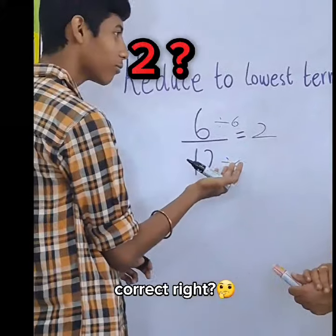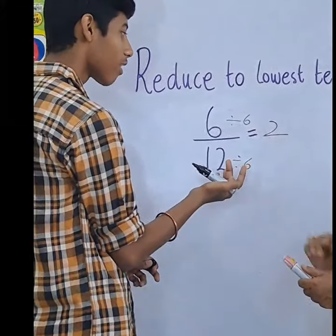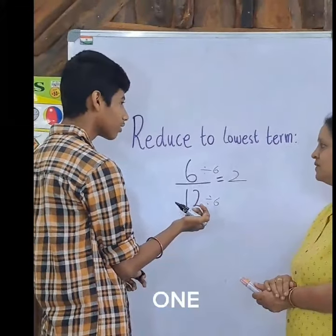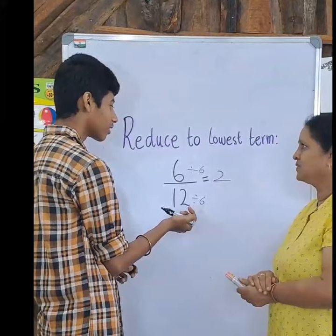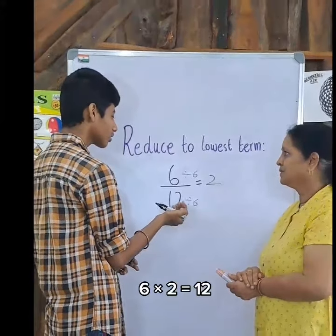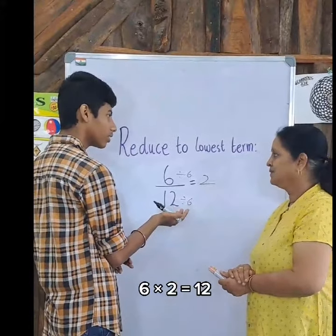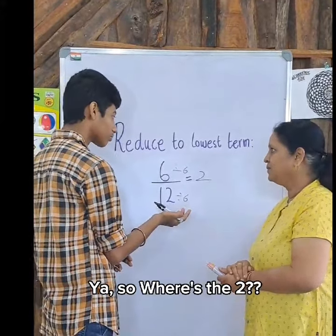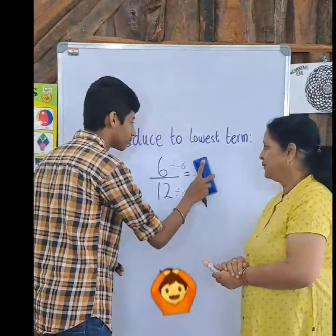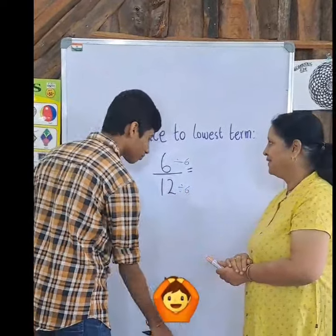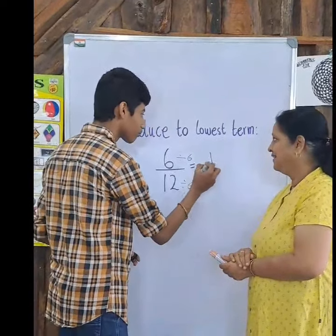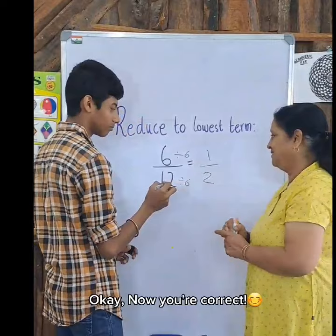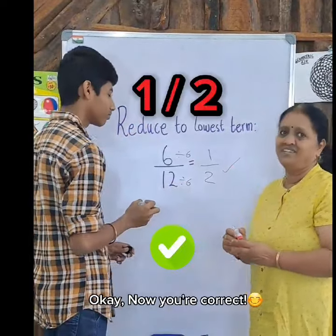It's correct, right? What is 6 divided by 6? 1. And what's 12 divided by 6? 6 plus 12. Yeah, so where is the 2? Okay, now you're correct, right? Okay.